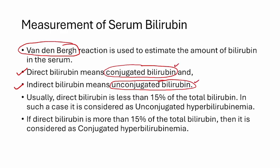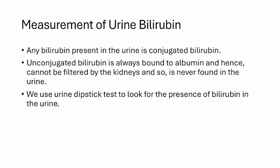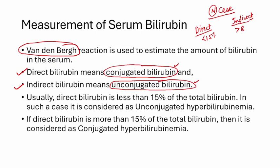Another important point is which fraction — direct or indirect — is more prevalent in normal scenarios. In normal cases, direct bilirubin is less than 15 percent of total bilirubin, and indirect bilirubin is more than 85 percent of total bilirubin.